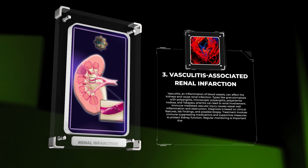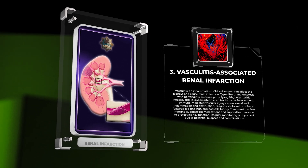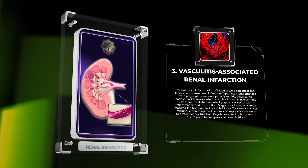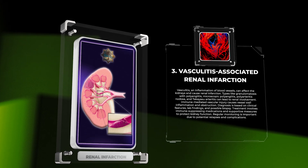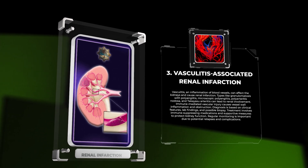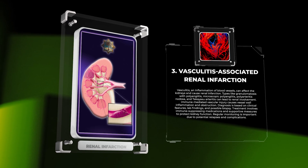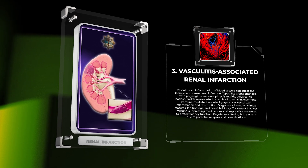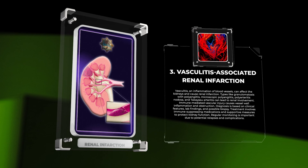Vasculitis, an inflammation of blood vessels, can affect the kidneys and cause renal infarction. Types such as granulomatosis with polyangiitis, microscopic polyangiitis, polyarteritis nodosa, and Takayasu arteritis can lead to renal involvement. Immune-mediated vascular injury causes vessel wall inflammation and obstruction. Diagnosis is based on clinical features, lab findings, and possible biopsy. Treatment involves immunosuppressive medications and supportive measures to protect kidney function, with regular monitoring due to potential relapses and complications.